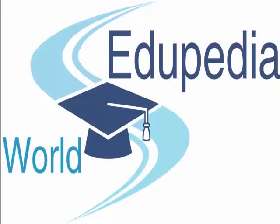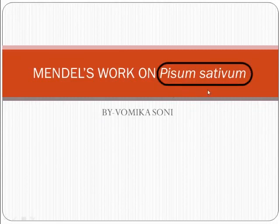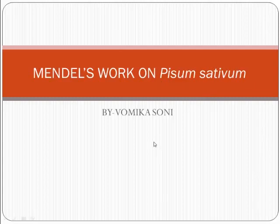Hello friends, welcome to edupediaworld.com. This is Vomika Soni, your video lecturer. And today we will discuss about a new topic, Mendel's work on garden pea. Pisum sativum is the scientific term for garden pea. In my previous video lecture, I have told you about genetics and given a brief introduction to genetics.